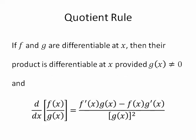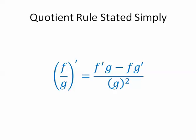Since our function is a quotient, we will need to use the quotient rule. The quotient rule, simply stated, is the derivative of a quotient is the derivative of the first times the second minus the first times the derivative of the second all over the second squared.